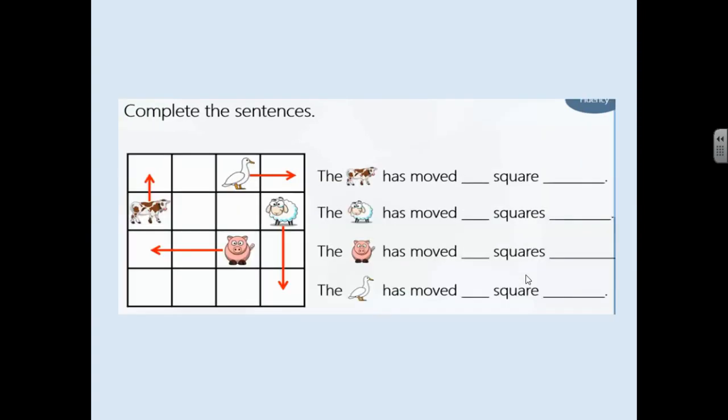Right, this time around we've got animals here. So it's not an object or shape. So you need to complete these sentences here. Please have a go at it and I'll go through the answers in a minute.